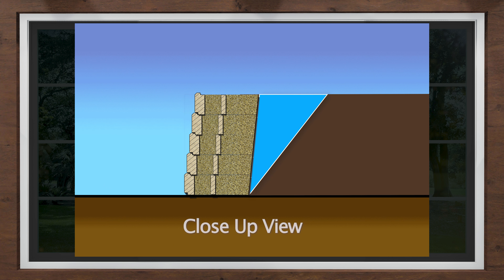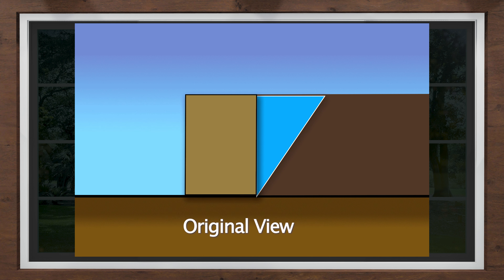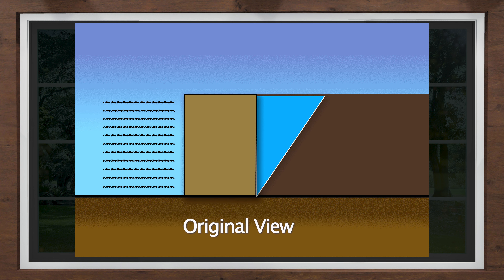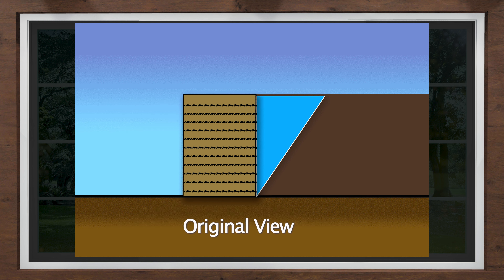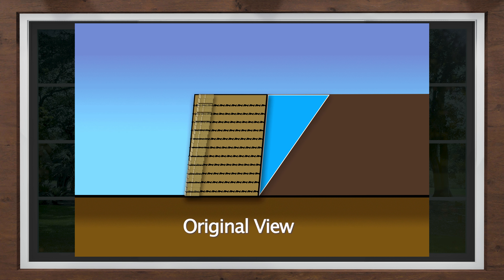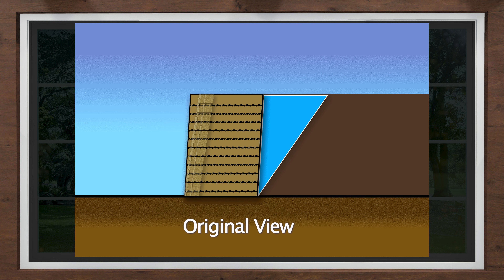A retaining wall that relies solely on its own weight to stand up is called a gravity wall. The blocks and wall rock provide sufficient mass to resist the soil pressure. Taller walls will require more mass than just the block and wall rock, which is when we use a composite structure of compacted soil reinforced with geogrid and Allen Block facing. This mass uses its own weight and internal shear strength to resist both the sliding and overturning pressures for the soil being retained.